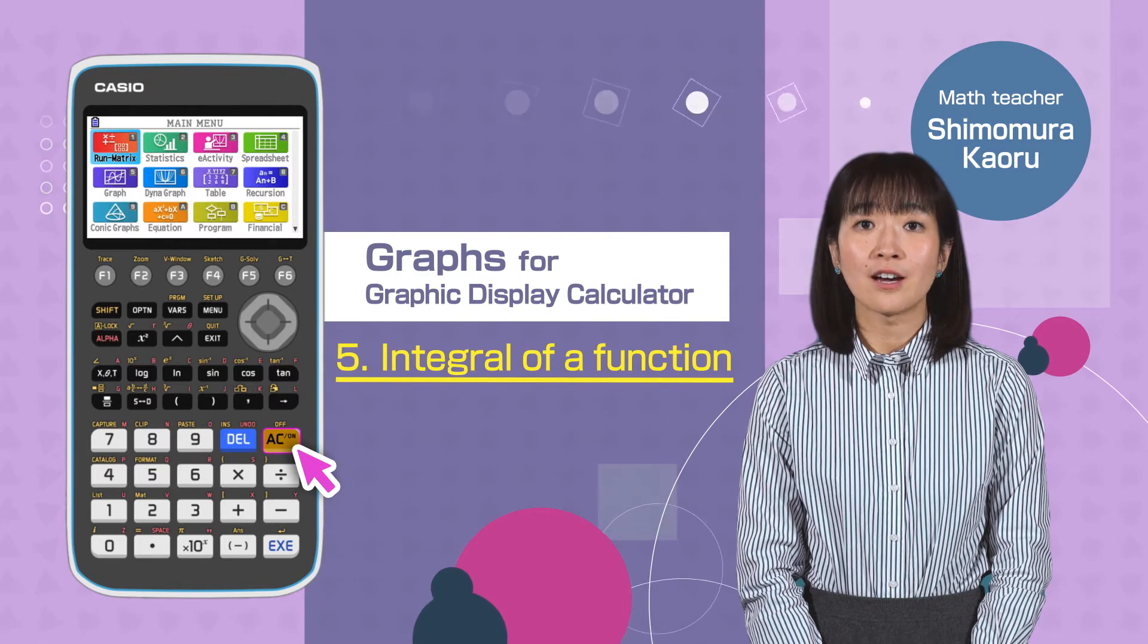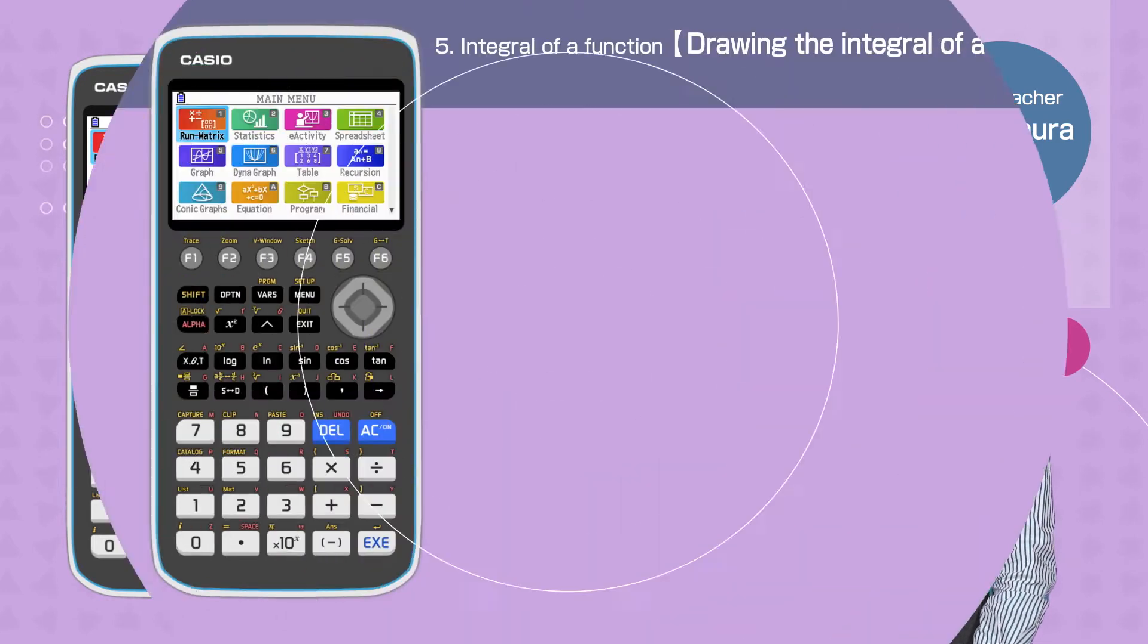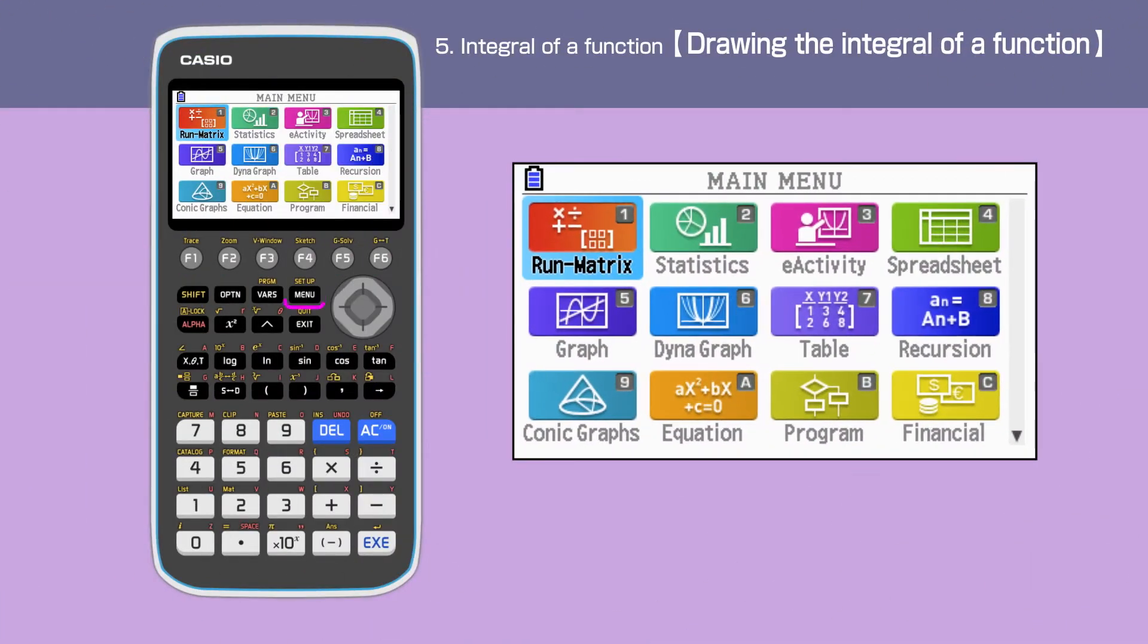Switch on your calculator by pressing the AC button. Press the menu button to open the main menu. Then move the cursor or press 5 to select the graph menu.